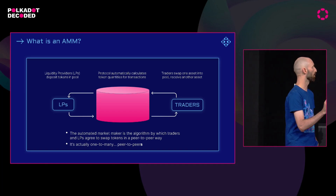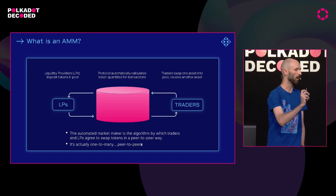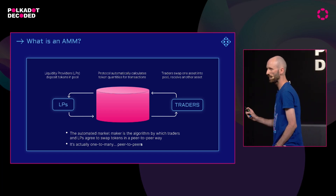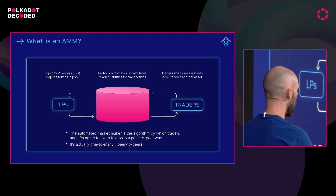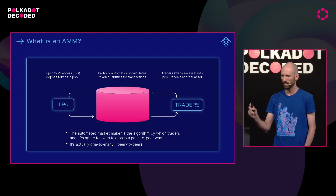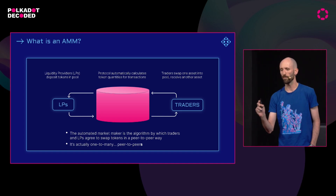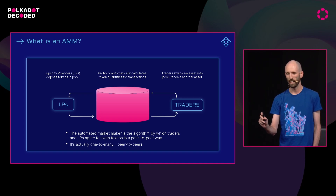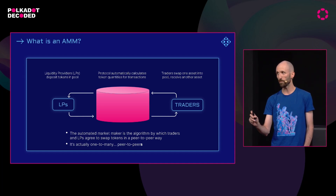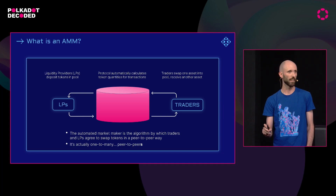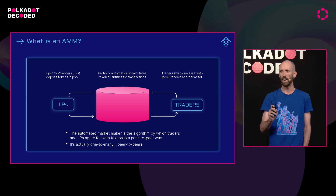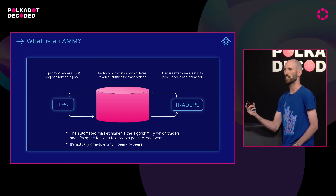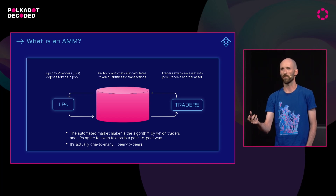Before we get to building blocks, we first need to talk about what is an automated market maker? For this talk, an automated market maker, or AMM for short, is a protocol which facilitates the peer-to-peer swapping of different tokens. I'm defining this a little narrowly, deliberately. Common examples you can think of include Uniswap, Curve — these types of AMMs.